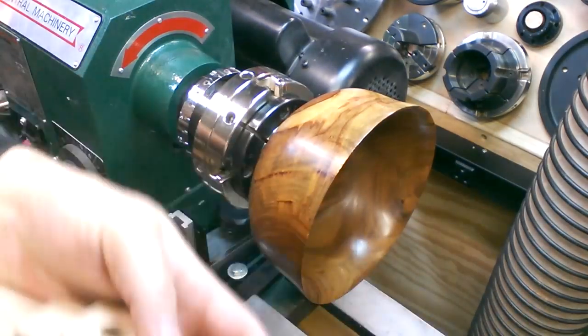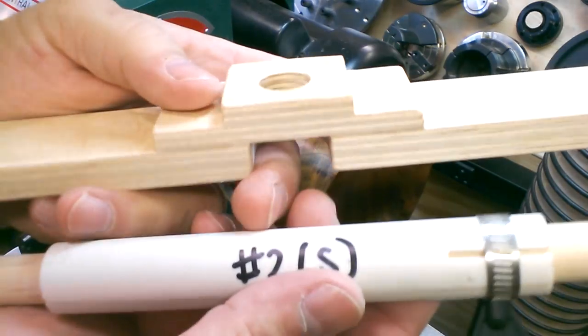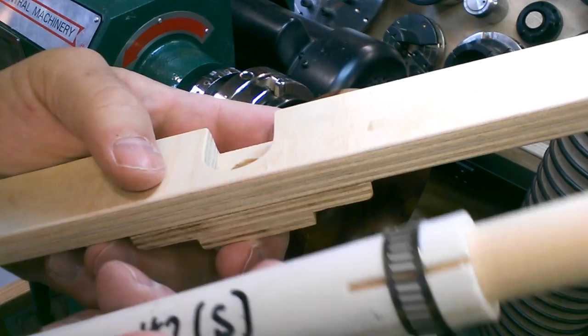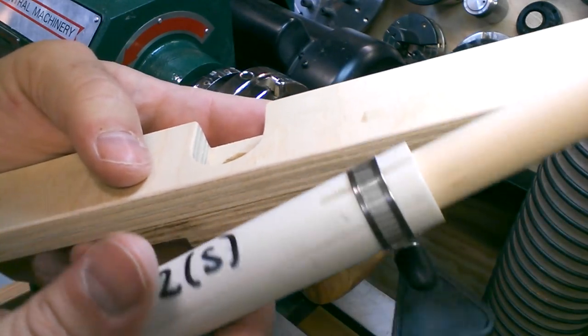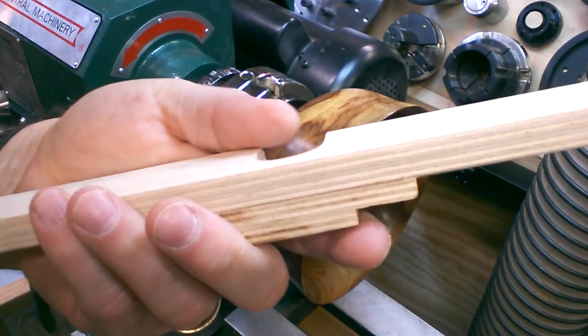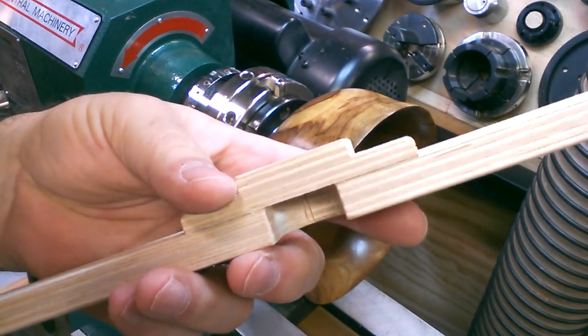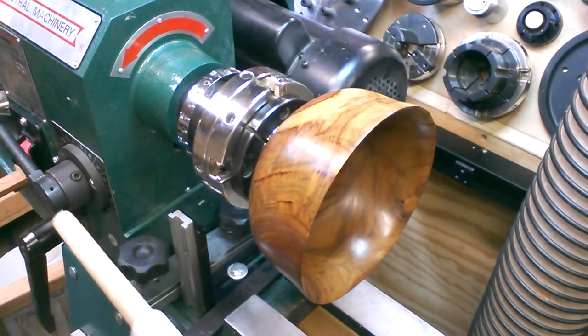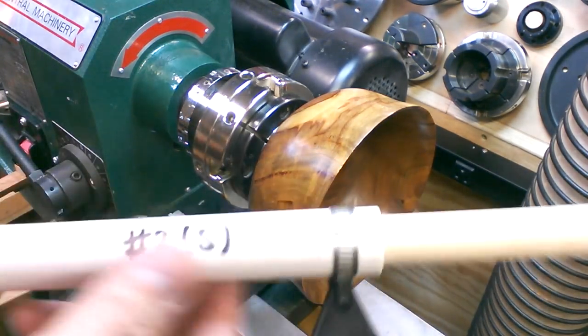Here are the two pieces of the depth gauge completed. The PVC on the dowel with the hose clamp, and then the crossmember that is the actual gauge, if you will. So the way this works, again, this is a cheater stick.